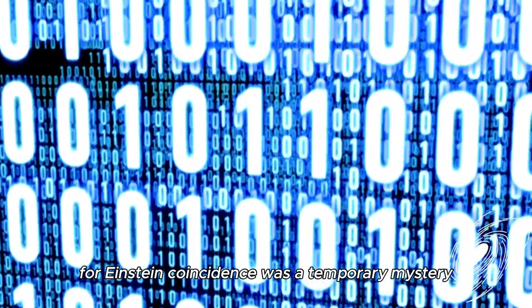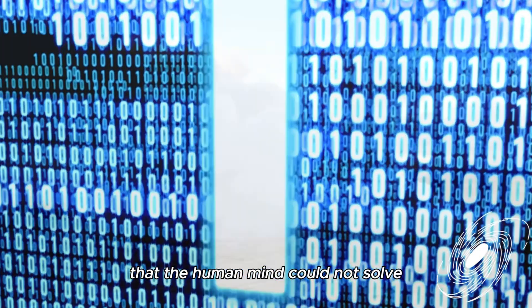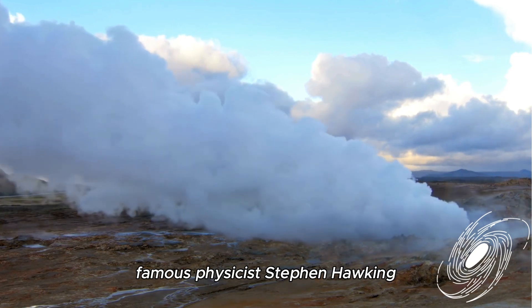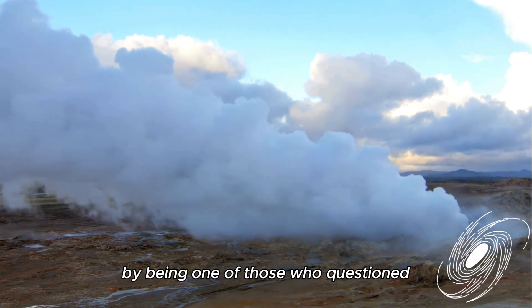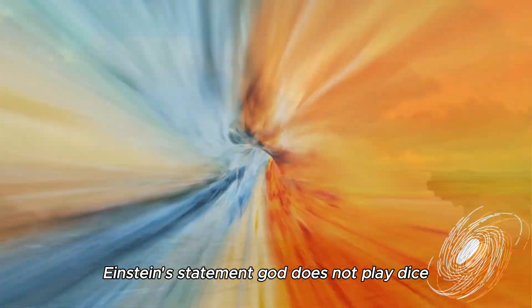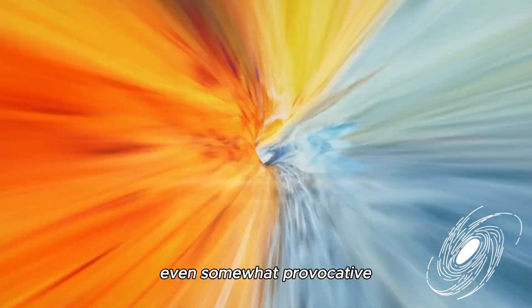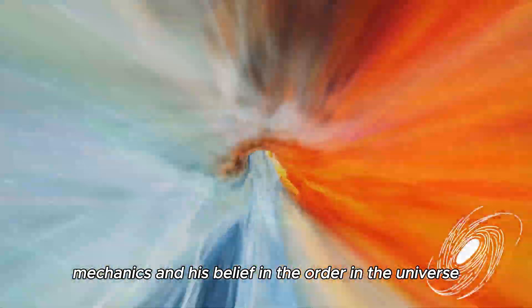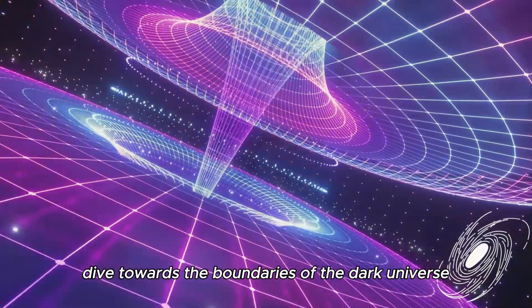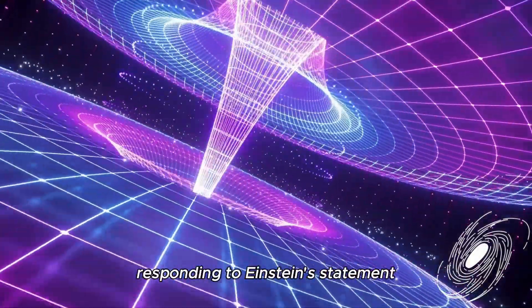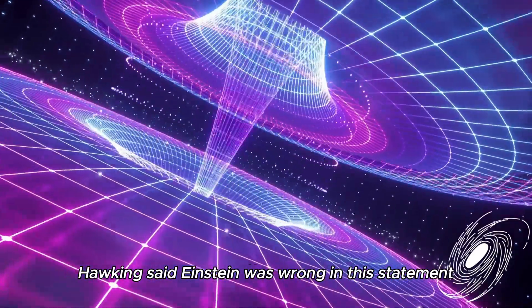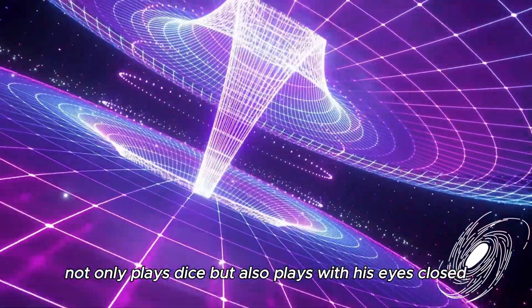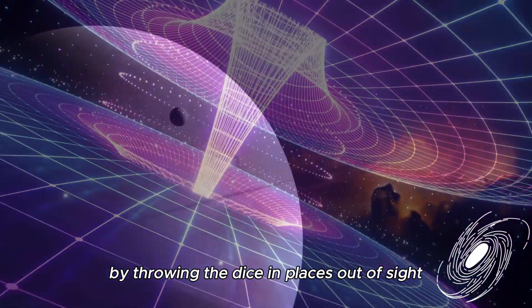For Einstein, coincidence was a temporary mystery that the human mind could not solve. For Bohr and the quantum world, it was the functioning of nature itself. Famous physicist Stephen Hawking made an impressive contribution to this debate by being one of those who questioned Einstein's statement, 'God does not play dice.' Hawking's approach was quite different, even somewhat provocative. While he criticized Einstein's opposition to quantum mechanics and his belief in the order in the universe, he made a bold dive towards the boundaries of the dark universe. Responding to Einstein's statement, Hawking said, 'Einstein was wrong in this statement. The existence of black holes shows that God not only plays dice, but also plays with his eyes closed and occasionally surprises us by throwing the dice in places out of sight.'